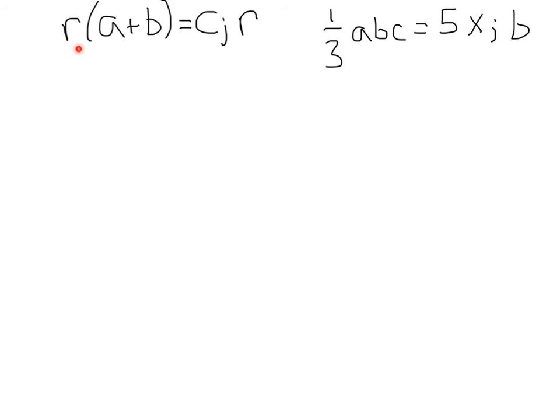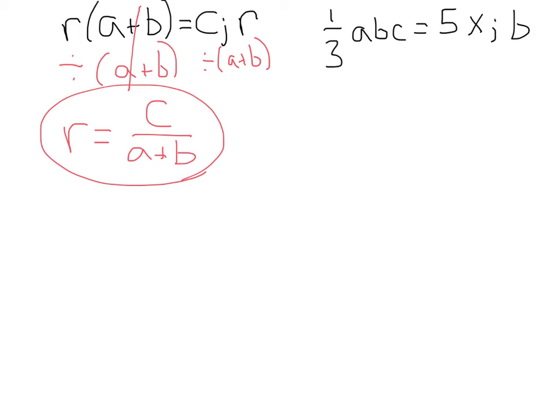Okay, here we have r times parentheses a plus b equals c, and they want us to solve for r. Now, just because we have parentheses does not necessarily mean we have to distribute. Here we have the r on the outside times a plus b. Now, we want to solve for r, so this a plus b, what we can do is we can just divide by a plus b. Divide the right side by a plus b. These will cancel, and that's just going to leave us with r equals c, the c that we had left, all divided by a plus b. And you've got your answer.